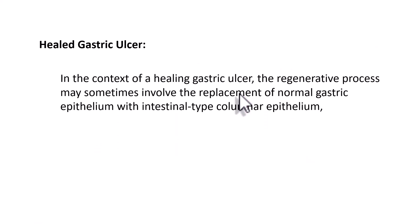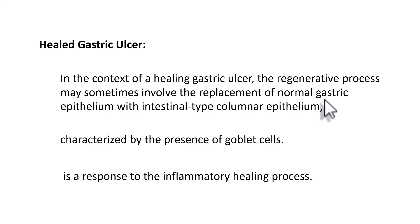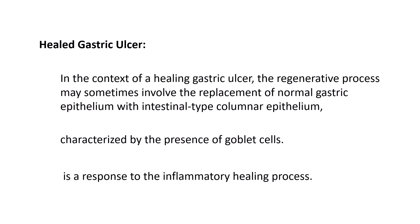Though Barrett's esophagus is initially a protective mechanism, individuals with this condition are at increased risk for development of adenocarcinoma of the esophagus and must be placed under regular follow-up. In healed gastric ulcer, the regenerative process sometimes involves replacement of normal gastric epithelium with intestinal-type columnar epithelium. Normally, goblet cells should not be found in the stomach, so finding goblet cells there indicates intestinal metaplasia — columnar epithelium along with goblet cells — as a response to the inflammatory healing process.